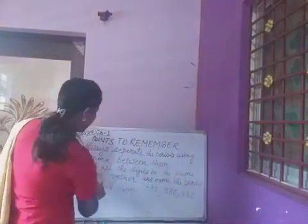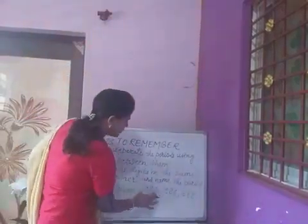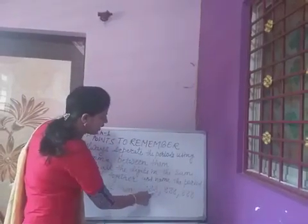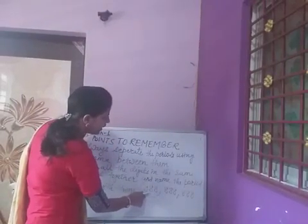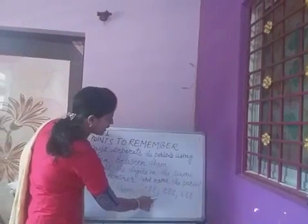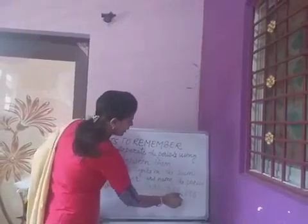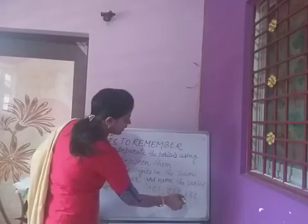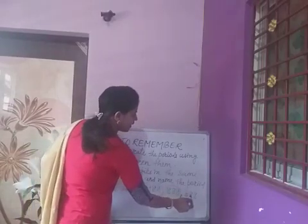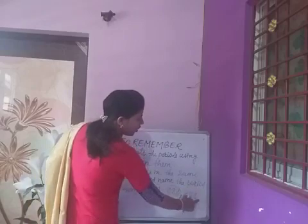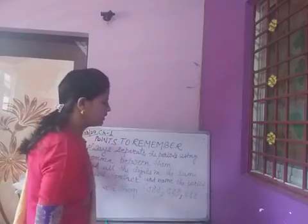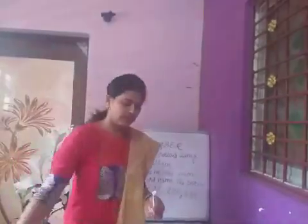Read all the digits in the same period together. This one period's digits is 888 — you have to read it as 888 million. Then 888 thousand. The comma marks the period. And then 888 — no comma, no period name, so we will not read 'ones'. Like this, you can use this method.